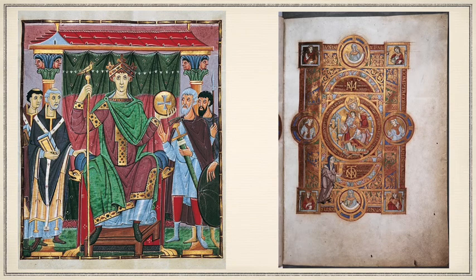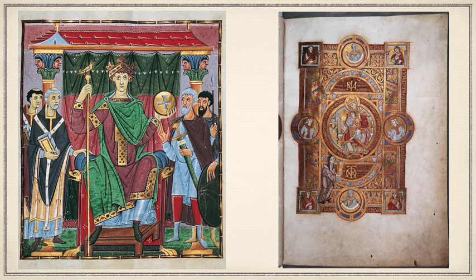Otto III continued this line and was obsessed with reviving the Christian Roman Empire — he actually moved his court to Rome. Here on the left we see a folio from the Gospel of Otto III, showing him as the large central figure enthroned, holding a scepter and cross-inscribed orb signifying his universal authority, conforming to a Christian imperial iconographic tradition that began with Constantine. Unfortunately, his desire to revive the Christian Roman Empire did not come to fruition — he died at the age of 21 and, per his request, was buried beside Charlemagne at Aachen.